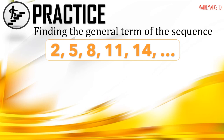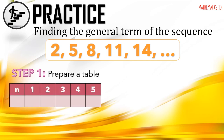For our first example, find the general term of the sequence 2, 5, 8, 11, 14, and so on. Based on the steps provided, let's start by preparing a table. Write the heading n first, where the entries are positive consecutive integers starting from 1, then 2, 3, 4, 5, and so on — at least 5 consecutive integers is sufficient.